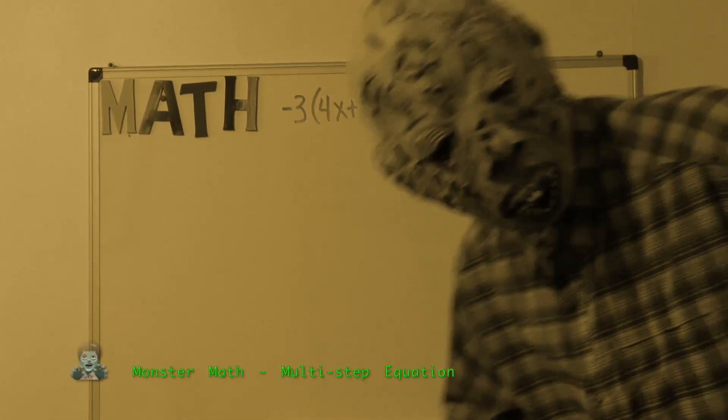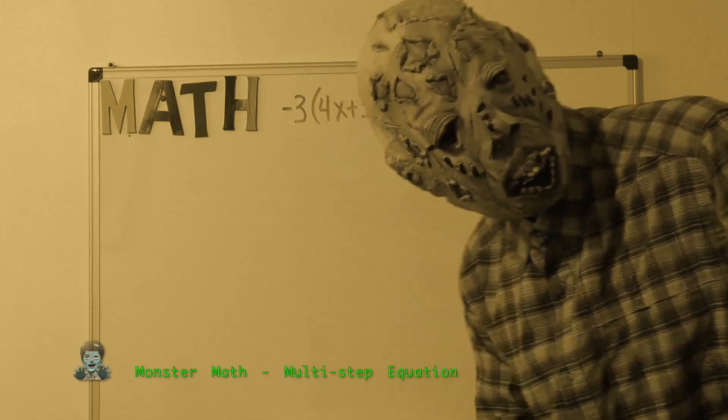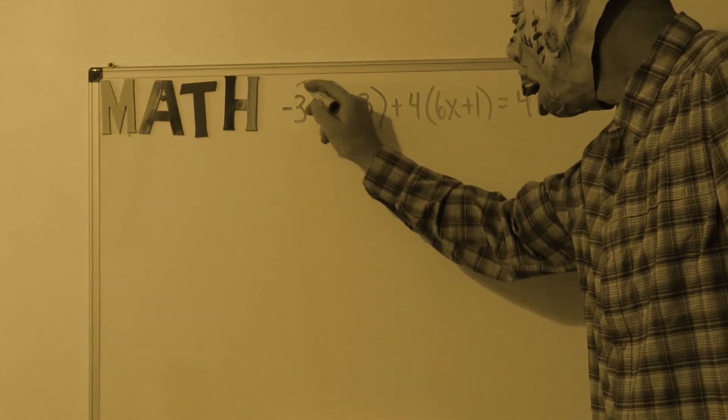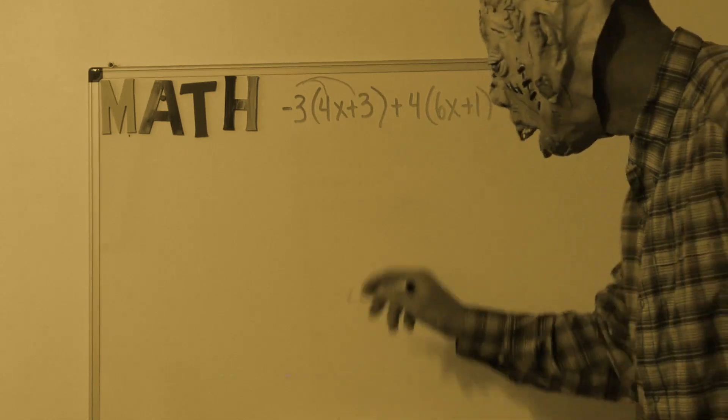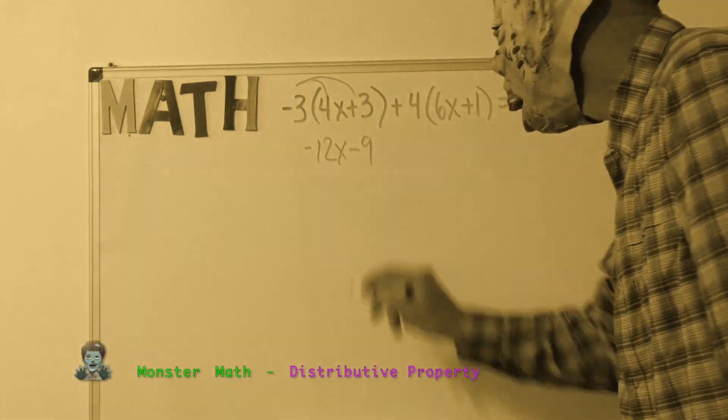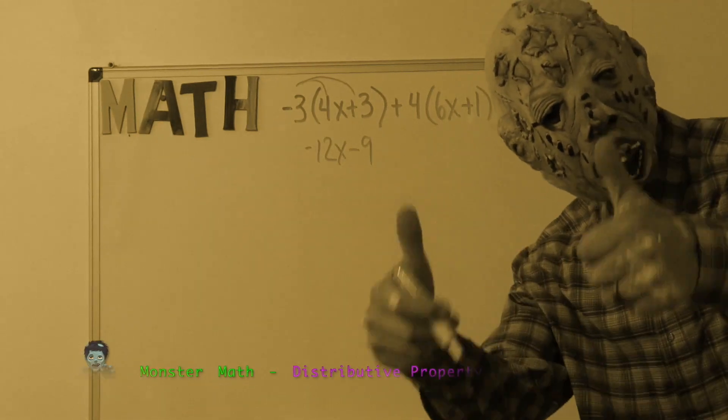That is a multi-step equation and I am here to help you solve it with my dry erase marker. Those arrows are for the distributive property. I have applied it exactly correctly.